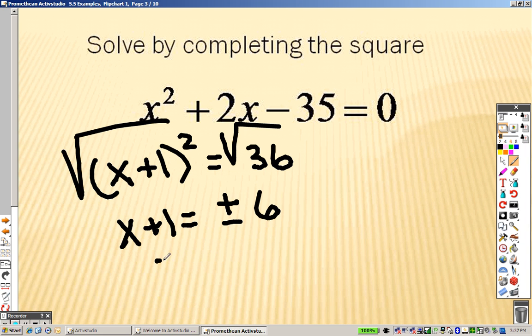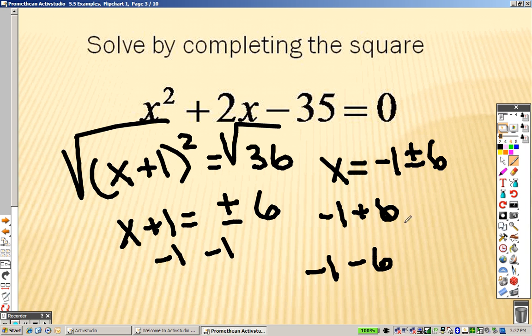Then what do we do here to get x by itself? I subtract 1 on both sides. So we end up getting x equals negative 1 plus or minus 6. Here's what that means. Negative 1 plus 6 is an answer, and negative 1 minus 6 is an answer, which means you get 5 and negative 7.